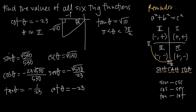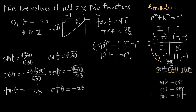Using the Pythagorean theorem, negative root 10 squared plus negative 1 squared equals c squared. The negative signs cancel: root 10 times root 10 is 10, plus 1 equals 11. So c squared equals 11 and c equals square root of 11.